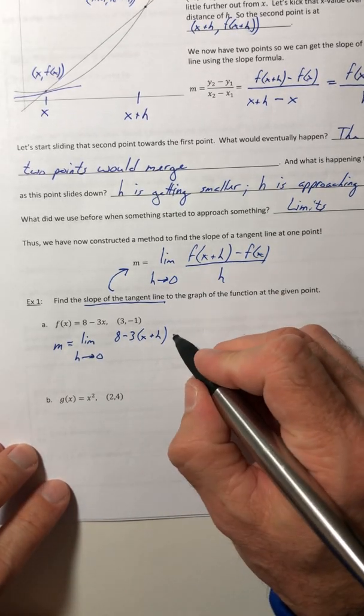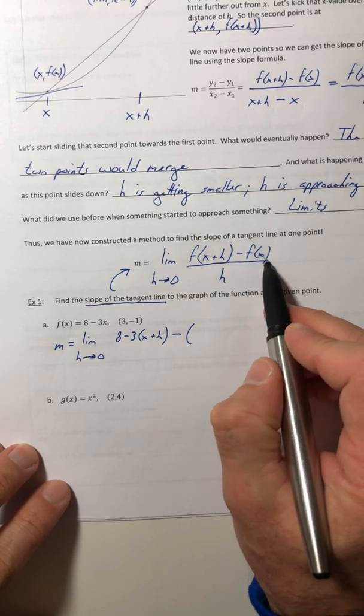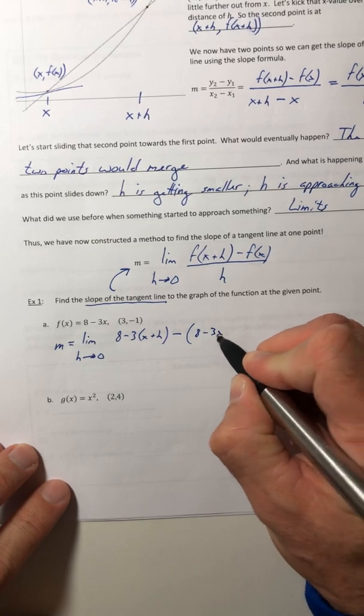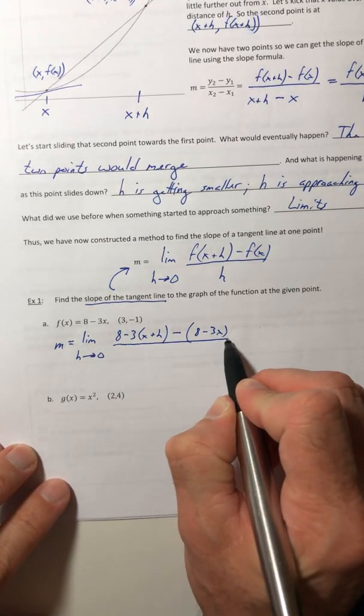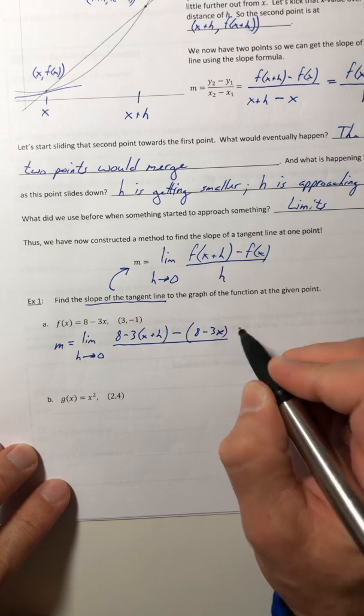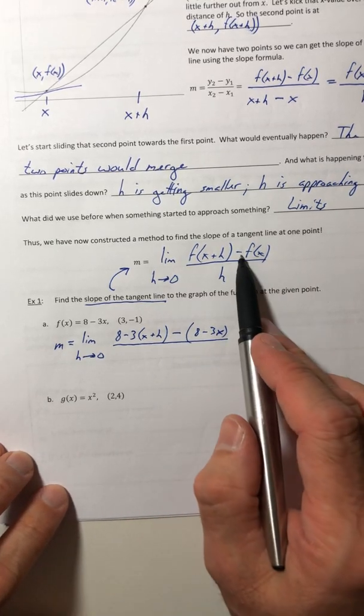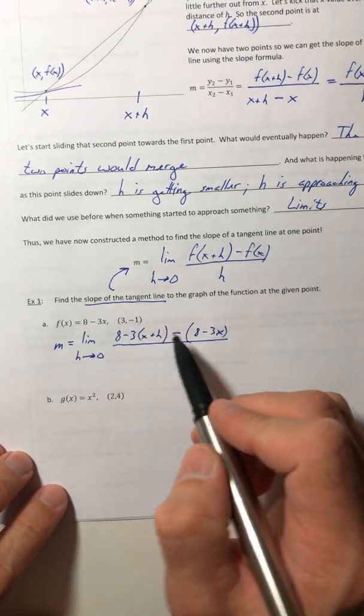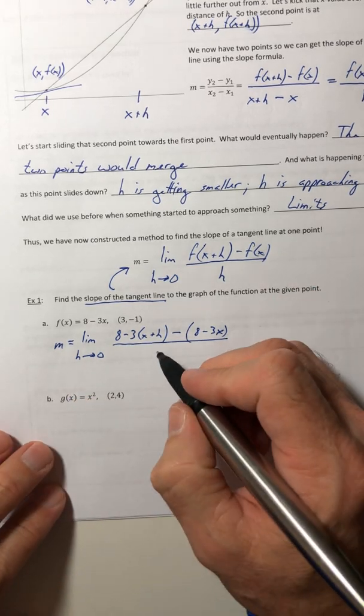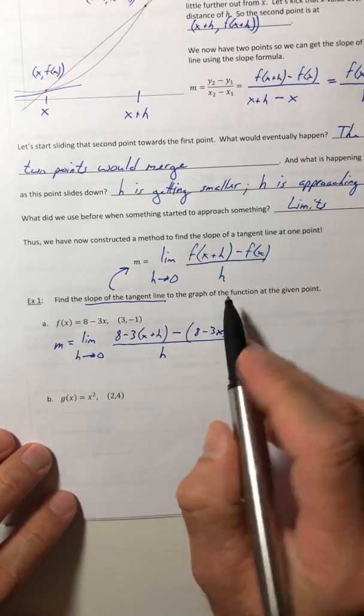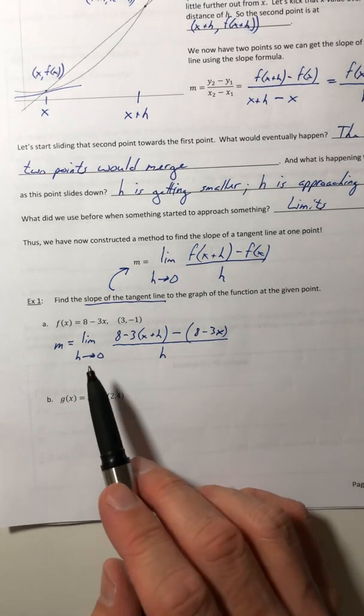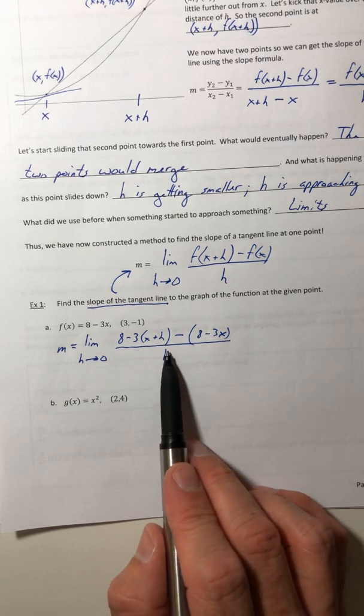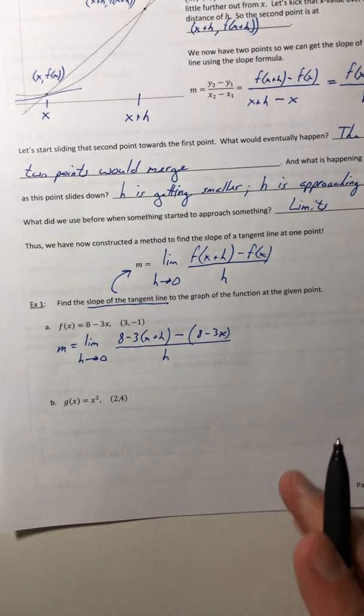Now we got to keep going - that was just the first little part. So minus f of x. Well f of x gave me 8 minus 3x. It's really important that you are subtracting off the entire function, not just the first term. You're subtracting all of f of x, not just parts of it. So surround f of x with parentheses. Then the denominator is just h. Your goal is to be able to plug this 0 in for h, which means you got to work this out and hopefully get this h down here to cancel out.